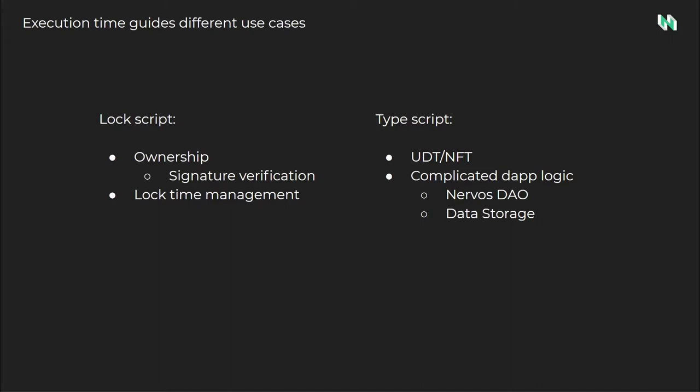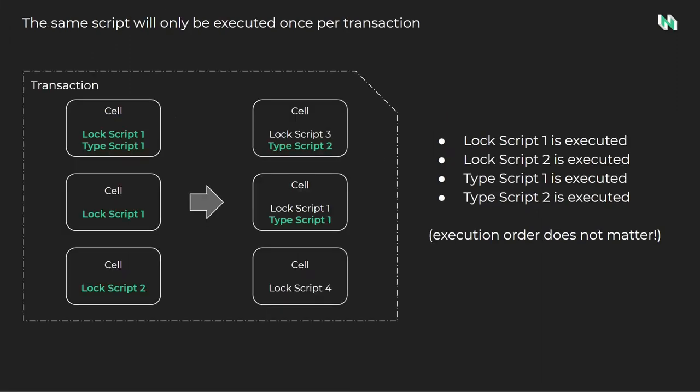A TypeScript may operate differently from a typical smart contract using the account model, but much of the practical usage is the same. At the end of today's workshop, we will demonstrate a complete on-chain script, including all aspects from writing the script to testing to deployment. When a transaction executes, first lock scripts execute on all input cells, then type scripts execute on all input and output cells.